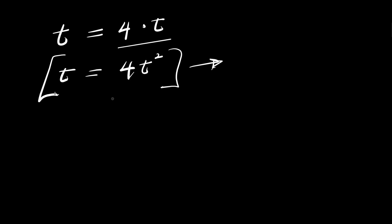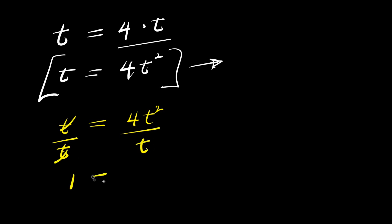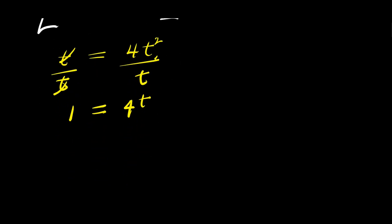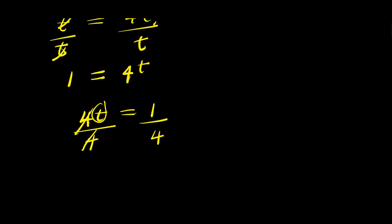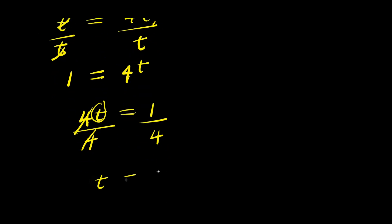Now we are going to solve this equation using two different methods. The first method is to divide each part of this equation by t. I divide this by t, I divide this by t. t divided by t is 1, and this equals — t squared divided by t is t — so this is 4t. I can rearrange this: I have 4 times t equals 1. I can isolate t by dividing by 4, giving t equals 1 over 4.